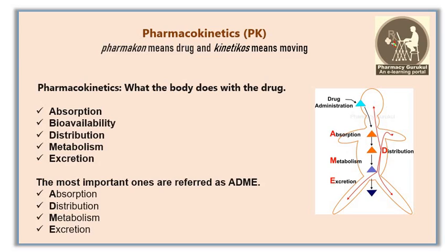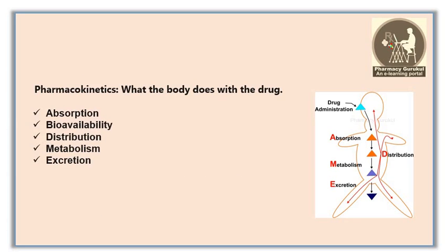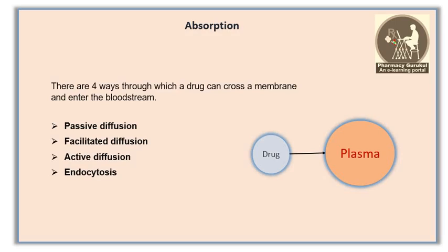Pharmacokinetics is all about what the body does with a drug. Here I have listed five fundamental pathways of drug movement inside the body: absorption is done by the body, distribution is done by the body, metabolism is done by the body, and excretion is done by the body. In short, you can remember it as ADME.